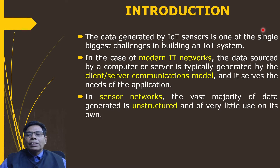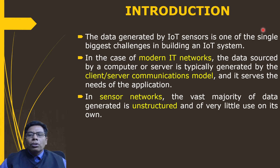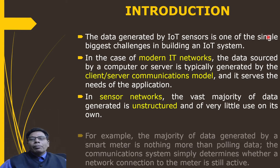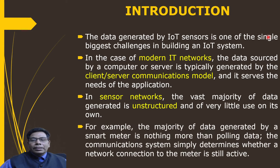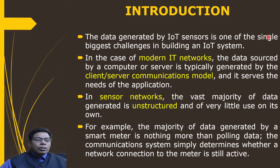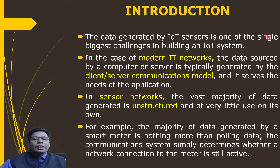In sensor networks, the vast majority of data generated is unstructured and of very little use on its own. For example, the majority of data generated by a smart meter is nothing more than polling data — the system simply determines whether a network connection to the meter is still active or not. So that data is not particularly important.